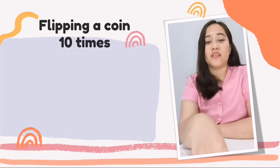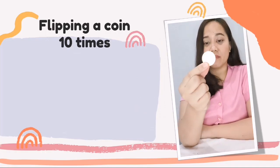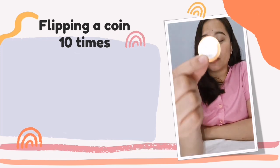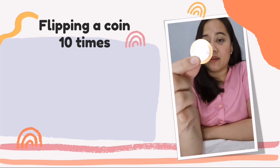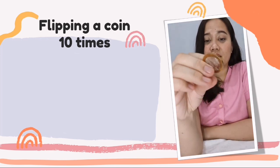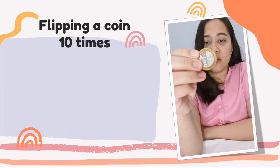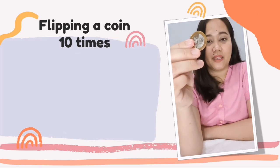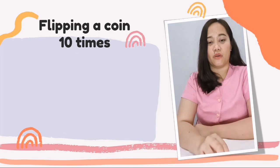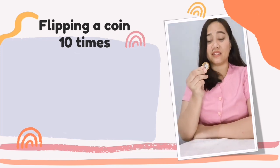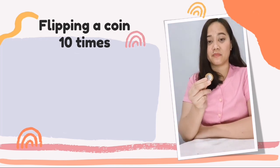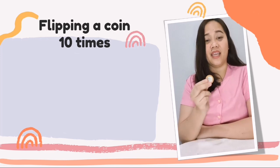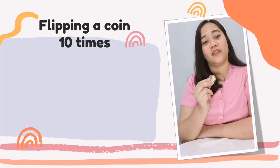For the next experiment, we need a coin. We are going to record whether the outcome is a head or a tail after flipping it. We will flip the coin ten times and record the results.